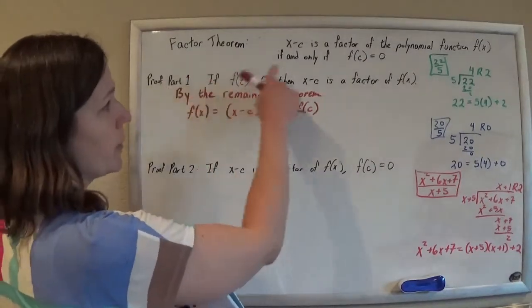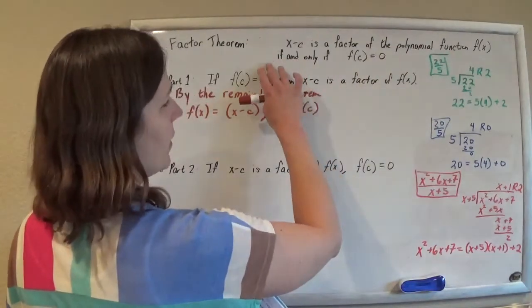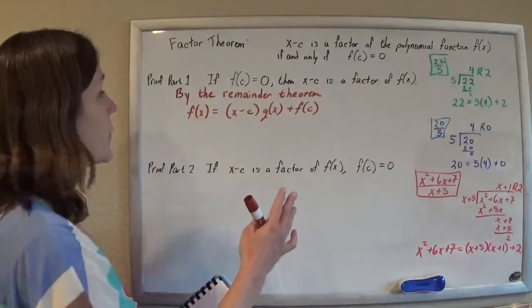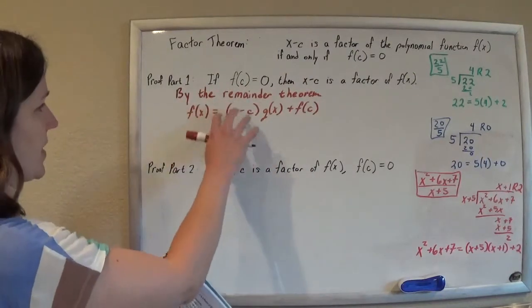So we need to prove the factor theorem that x minus c is a factor of this polynomial if and only if f of c equals zero. So ignore all that stuff for now, because it's actually very quick if we just accept some of this stuff.